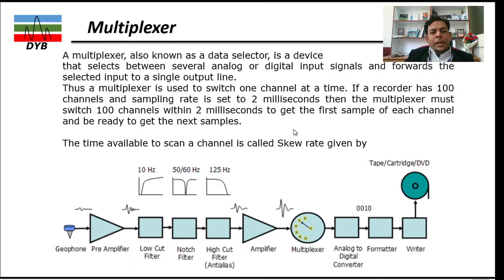So what is the multiplexer? A multiplexer, known as a data selector, is a device that selects between several analog or digital input signals and forwards the selected input to a single output line. In the real field, we have not one geophone, we have multiple geophones. Let's say we have hundreds of geophones, but the multiplexer is one.